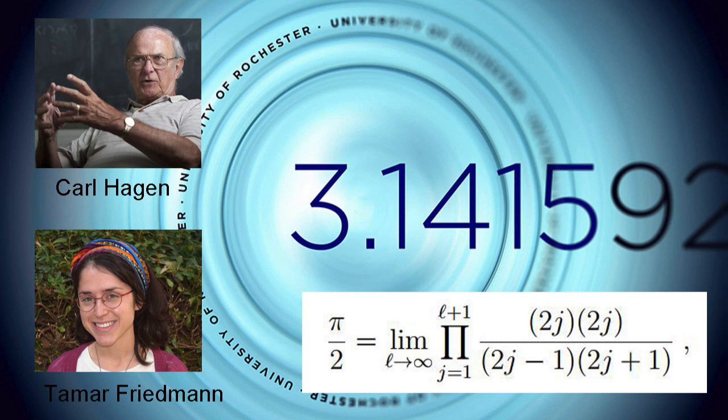Hagen asked his colleague Friedmann, a mathematician, to look at how the approximation trended for higher energy levels. The limit approached by the technique as the energy levels increased exactly matched the Wallis formula.